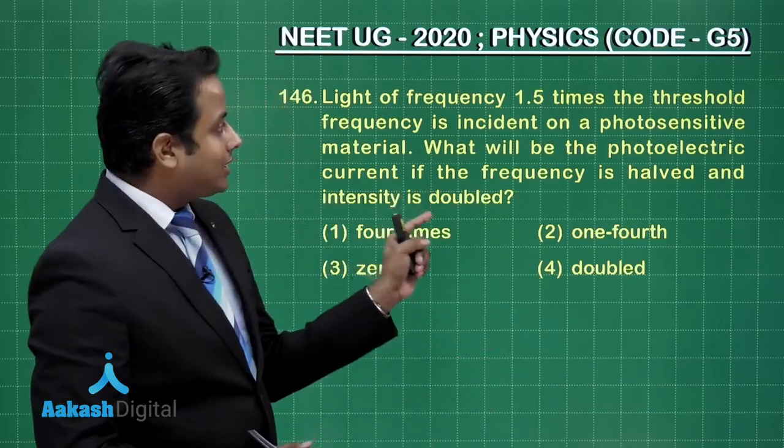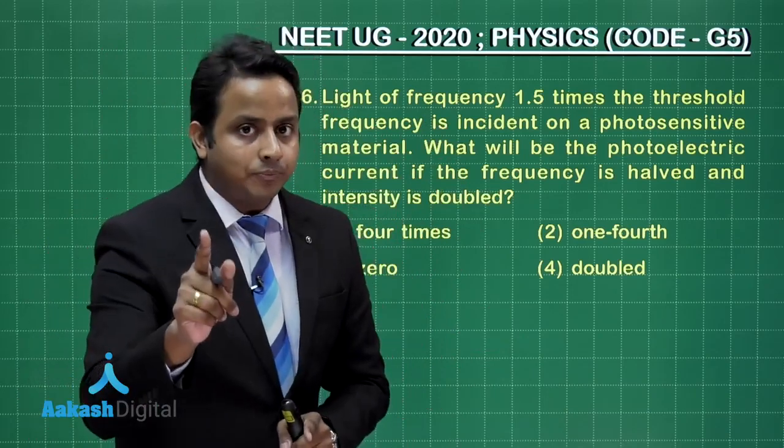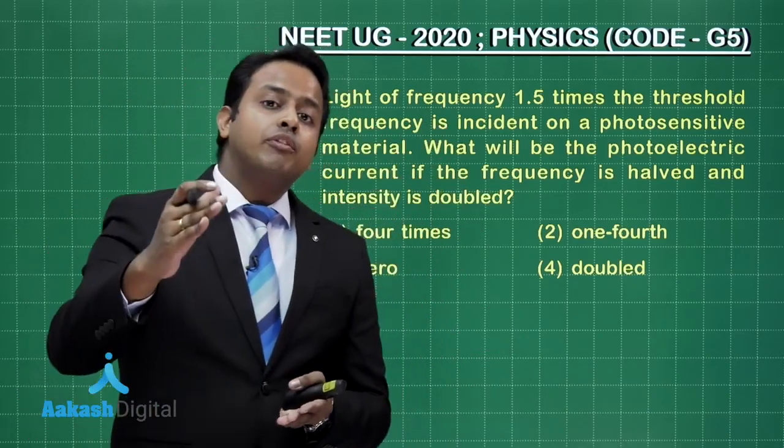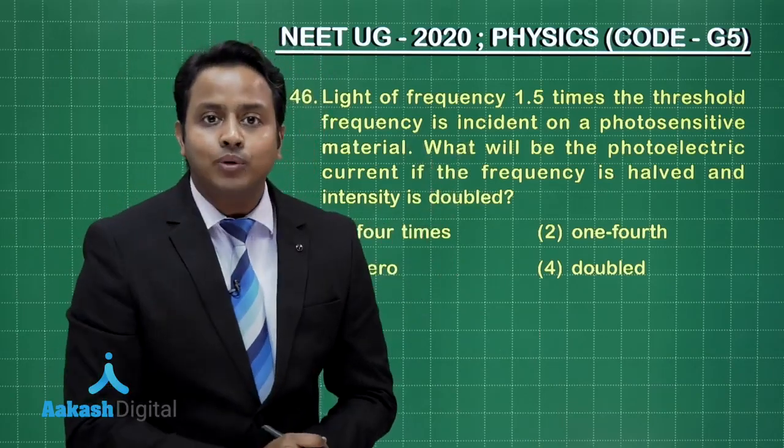In this question, the incident frequency was 1.5 times the threshold frequency. Now, when you reduce the frequency to half of its initial value, it will become less than the threshold frequency.